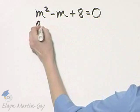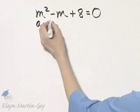So I'm going to now go to the quadratic formula. Remember, a is the coefficient of the squared variable, so a is 1.